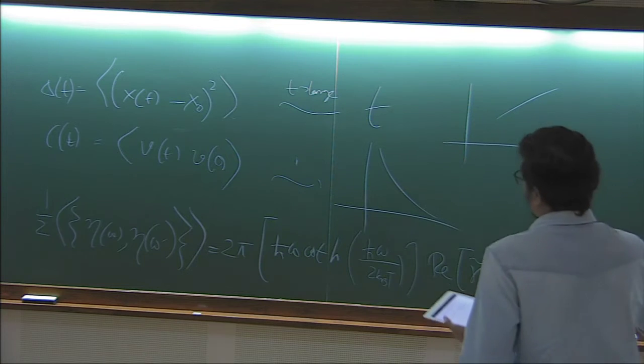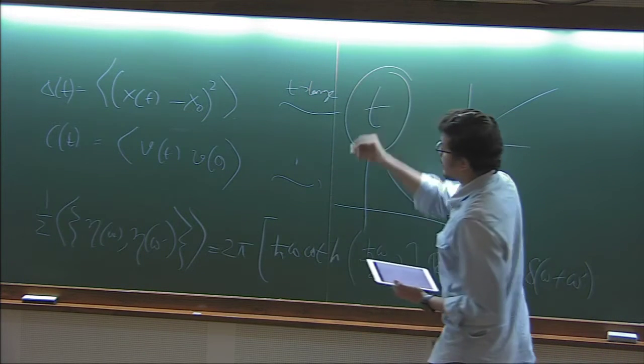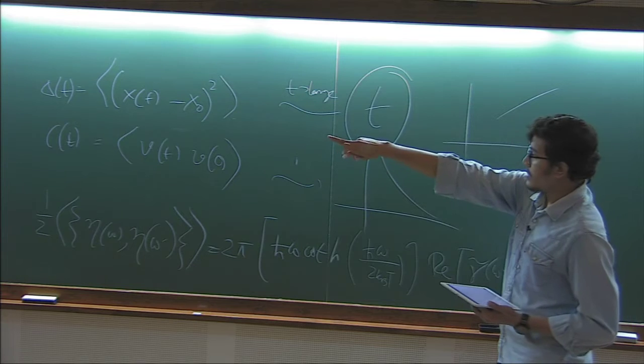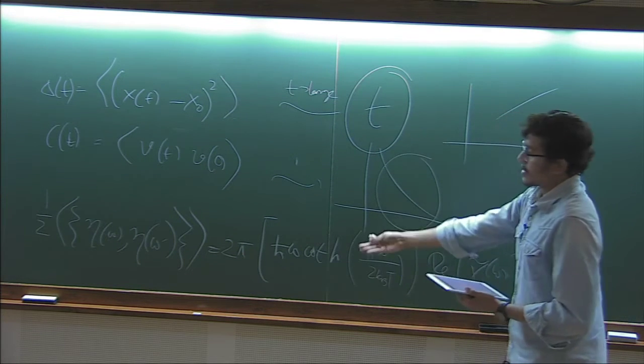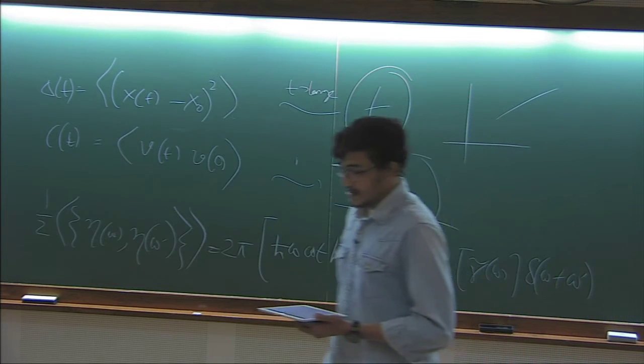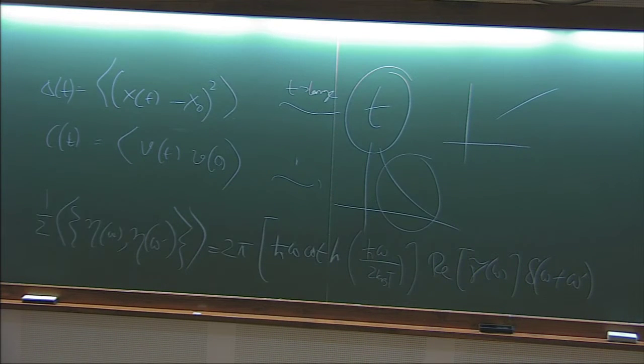So what we are interested in? We are interested in a Hamiltonian which will give me that equation. This behavior of delta t, this behavior of c t, this fluctuation dissipation theorem. So the one, I mean, this is a system of many, I mean, interacting system.